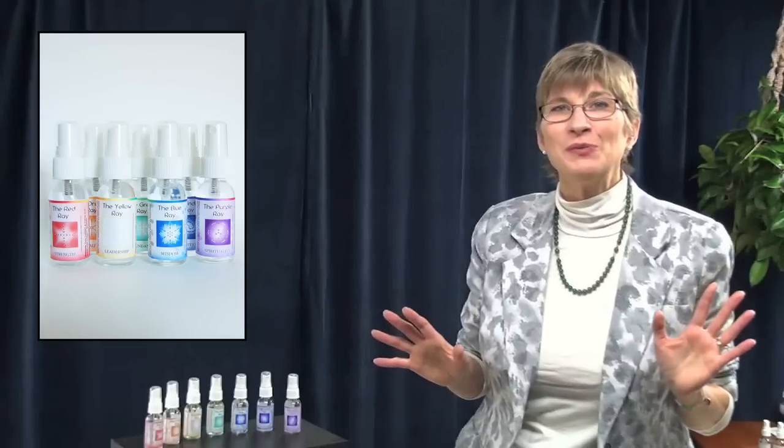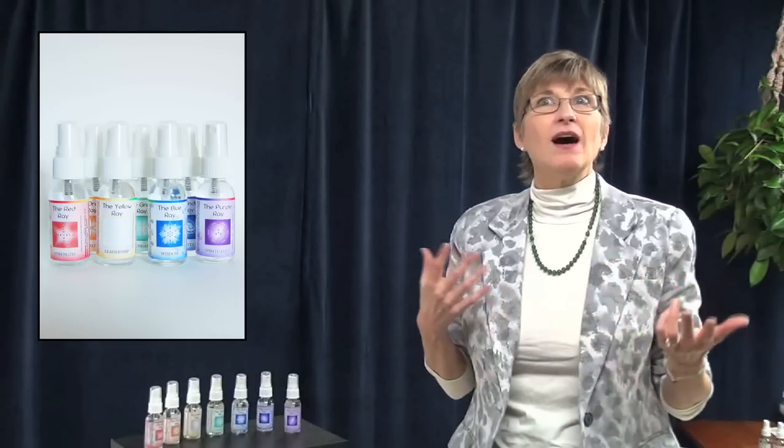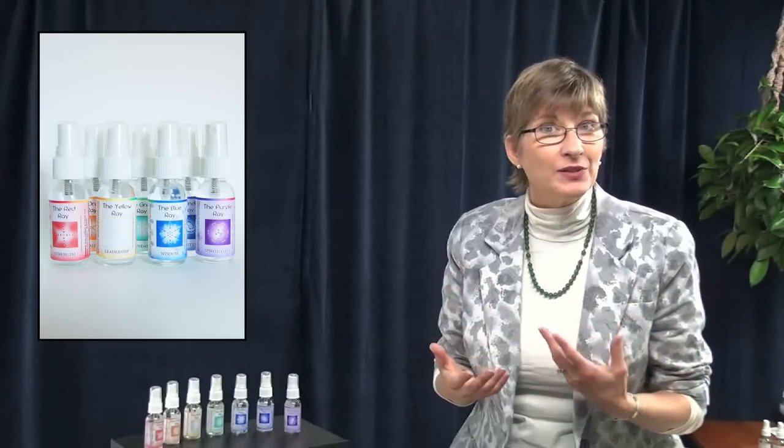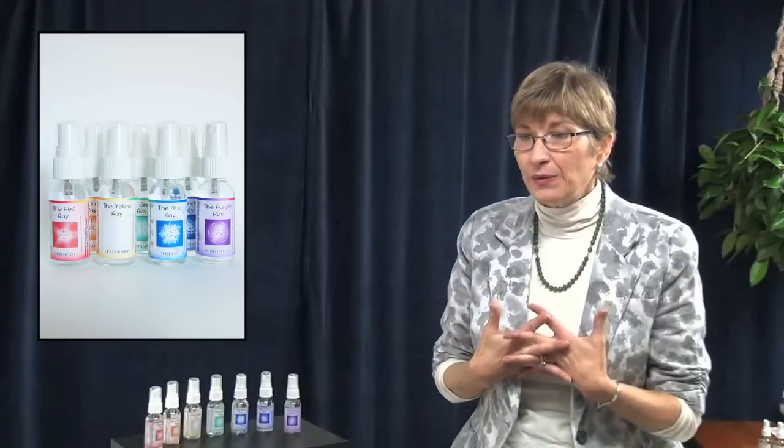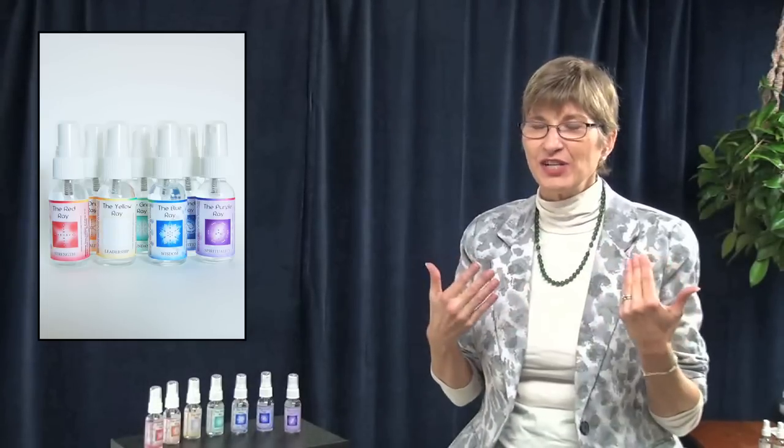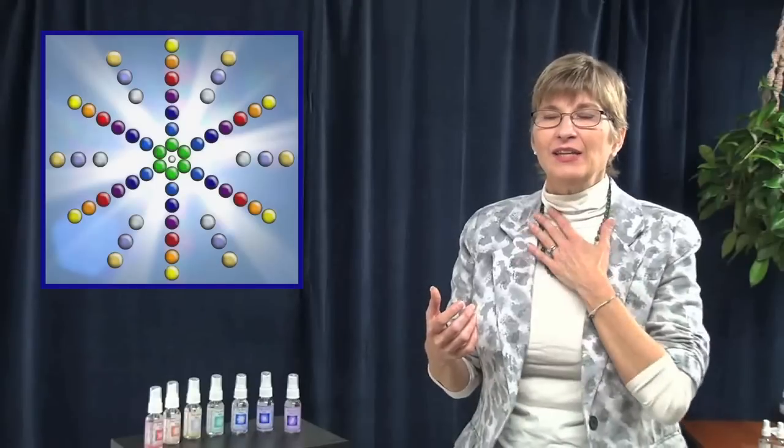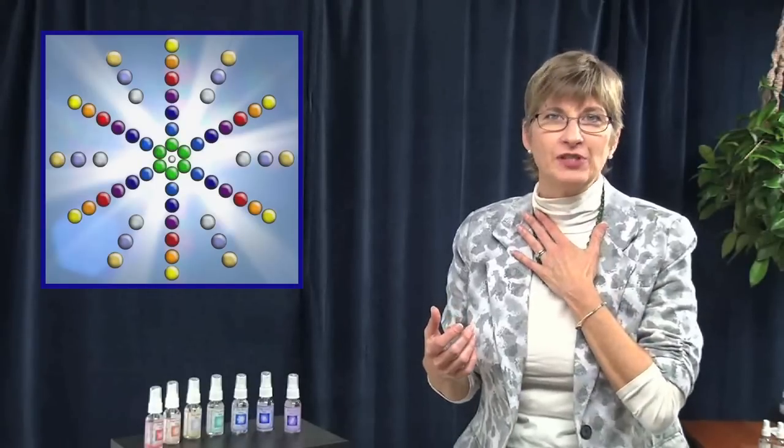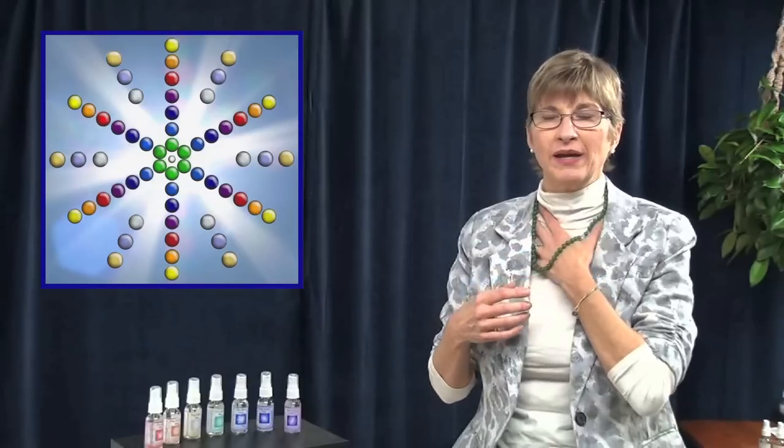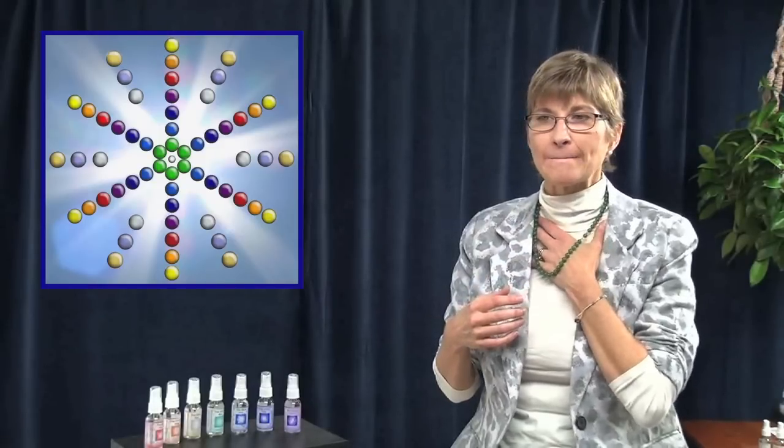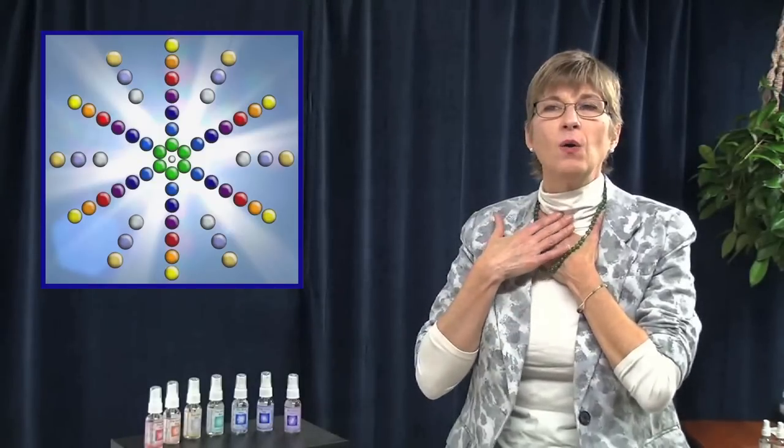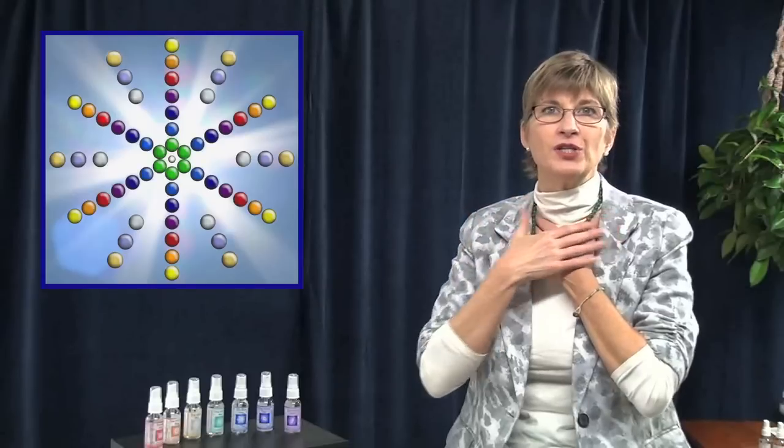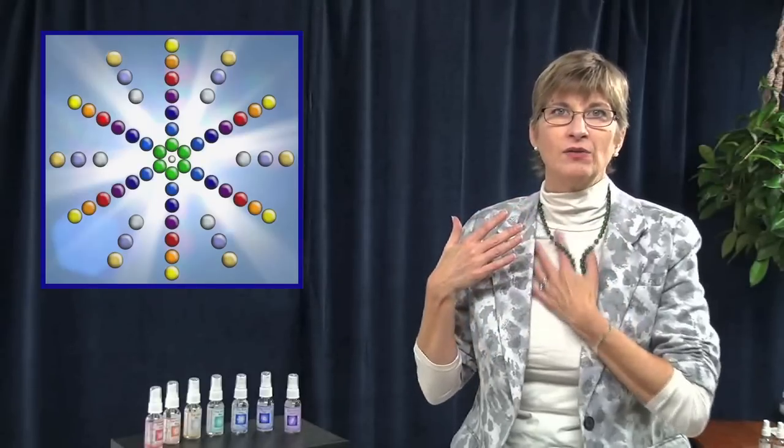So to do the procedure, you first of all think of a life issue that you would like to work with. Let me just think a second. Okay, I've got one. I'm not going to share it, but it's very present in my consciousness. And then you hold your hand at the top of your chest. I've got a necklace on. I'm going to hold my hand under my necklace. And you want to hold it so that it's high enough that you're touching your collarbone. You're not exactly over your heart. You're higher up than that.